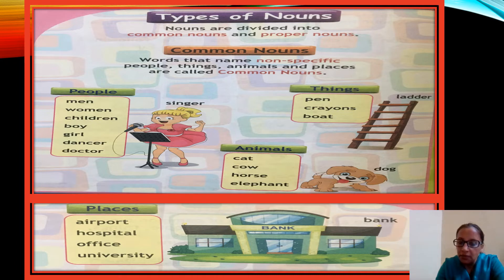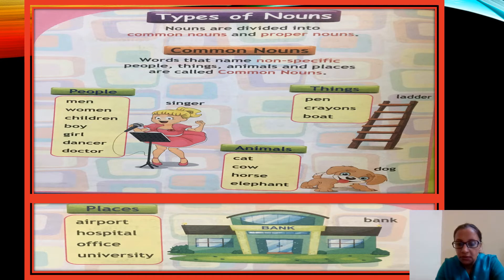Under animals: cat, cow, horse, elephant, dog — any cow, any cat, any horse — these are common nouns. Under places: airport, hospital, office, university, bank, school. These places have no particular name given, so all these are common nouns.